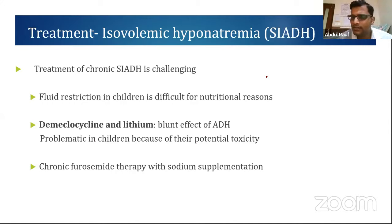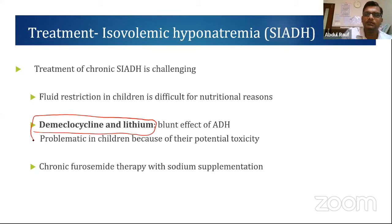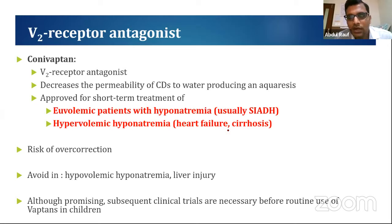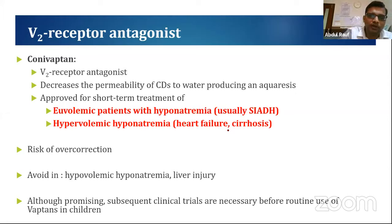In chronic CNS patients with chronic SIADH, demeclocycline and lithium may be used to blunt the ADH response. Vaptans (V2 receptor antagonists / ADH antagonists) are approved for SIADH and hypervolemic hyponatremia like CCF-related hyponatremia in adults. However, they are not routinely recommended as more trials are needed. Importantly, vaptans should not be used in hypovolemic hyponatremia (e.g., salt wasting), as they can aggravate the condition — they are only for euvolemic or hypervolemic states.